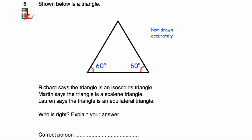Question number five: we've been given a triangle with a 60 degree angle and another 60 degree angle. Richard says it's isosceles — perhaps because it's got two equal angles. Martin says it's scalene — but it won't be scalene because in a scalene triangle the angles are all different sizes. Lauren says it's equilateral. Lauren is the correct person. Because the angles in a triangle add up to 180 degrees, 60 plus 60 equals 120 degrees.